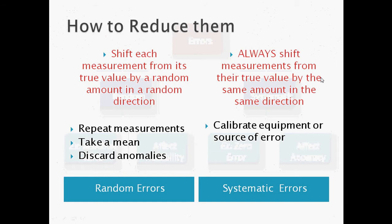So now that I know that I have these two types of errors, how can I reduce them? Well, random errors, they shift each measurement from its true value by a random amount in a random direction. So it's a little bit hard to know because I cannot predict what they're going to do. It's a little hard for me to reduce them, but I can do certain things. I can repeat measurements, take a mean and discard anomalies.